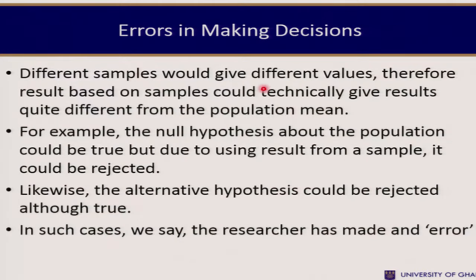There are several errors in making these decisions. Since decisions are based on a sample, different samples will yield different values, and results from samples could technically differ from the population. For example, the null hypothesis about the population can be true, but due to using sample results, it could be rejected. There are two situations: we can either reject a true null hypothesis, or accept a false null hypothesis — in such cases, the researcher has made an error.